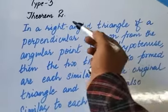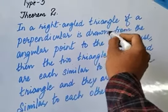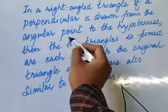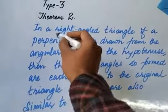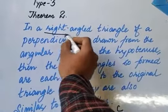And it also tells you if a perpendicular is drawn. Now please understand this is not construction. Because the theorem tells you that a perpendicular is drawn from the angular point. Now what is the angular point? When you are talking about the angular point of what triangle? Right-angled triangle. Then we are talking about the right angle.